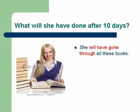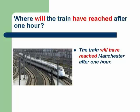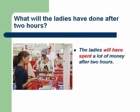Let us see a few examples. What will she have done after ten days? This is a girl who says she will read all these books within ten days. She always does whatever she says, so you can make an idea based on her performance and determination: she will have gone through all these books within ten days. Where will the train have reached after one hour? The train will have reached Manchester after one hour — the train is on the way to Manchester. What will the ladies have done after two hours? The ladies will have spent a lot of money after two hours; they are in the market buying things.